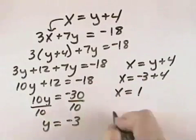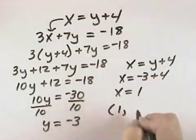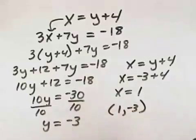So our solution is x equals 1, y equals negative 3, which can also be expressed as an ordered pair, 1, negative 3.